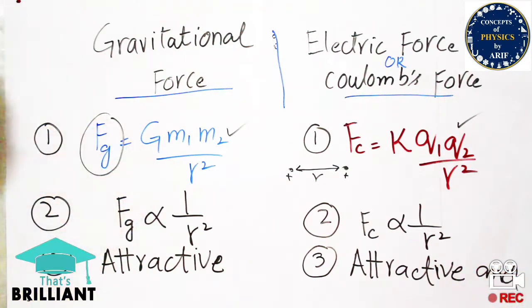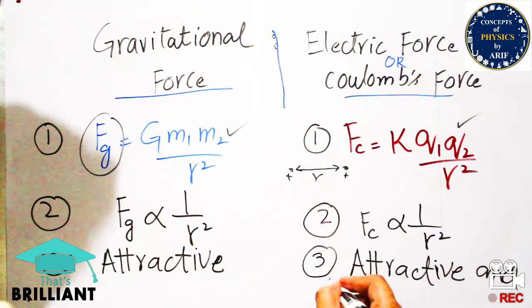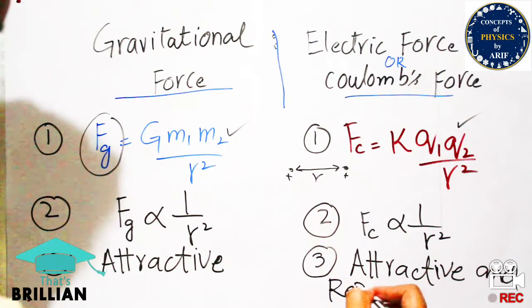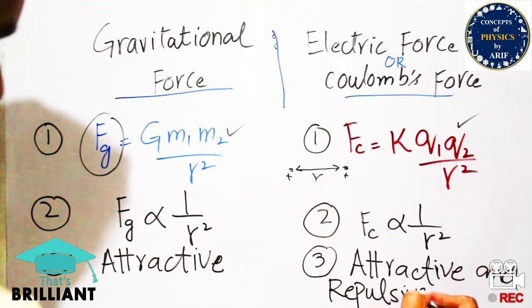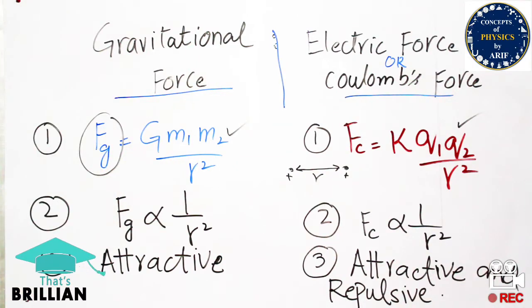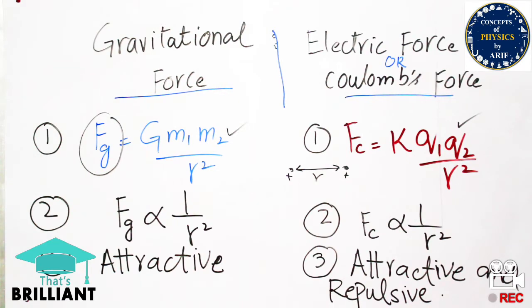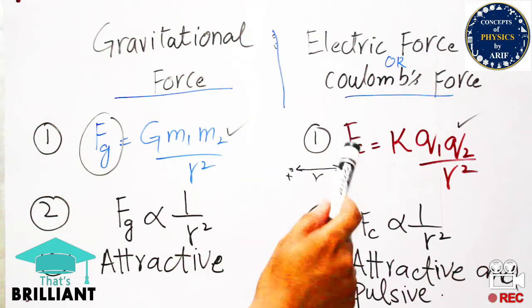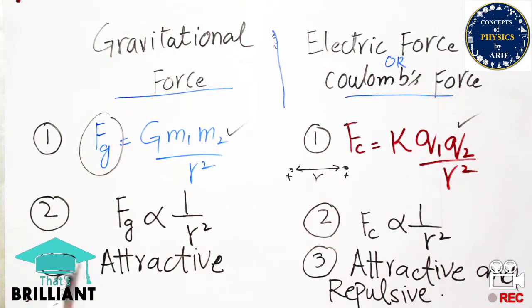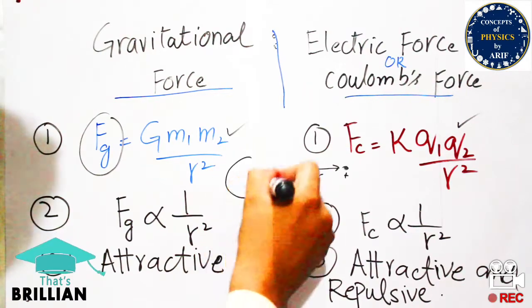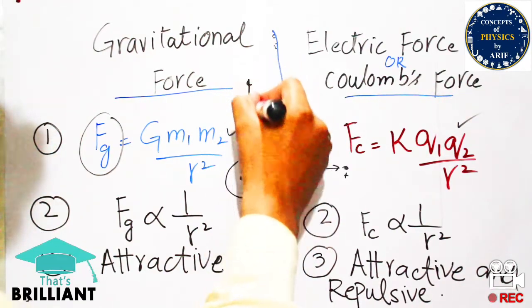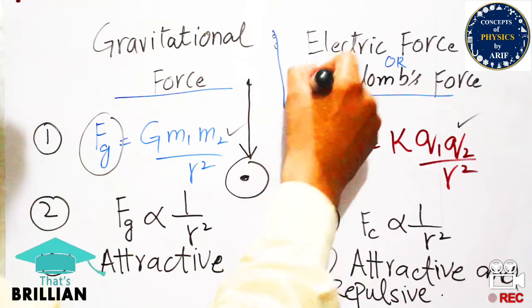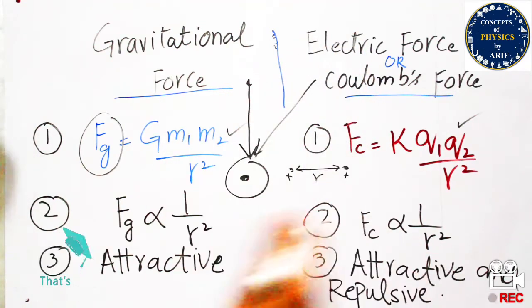If two charges are of the same polarity — for example, if both charges are positive, then they repel each other. If two charges are both negative, they are also repulsive. If two opposite-polarity charges are placed in front of each other, they attract each other. But in the case of gravitational force, it only attracts all bodies toward the center of mass, center of gravity, or center of the earth.